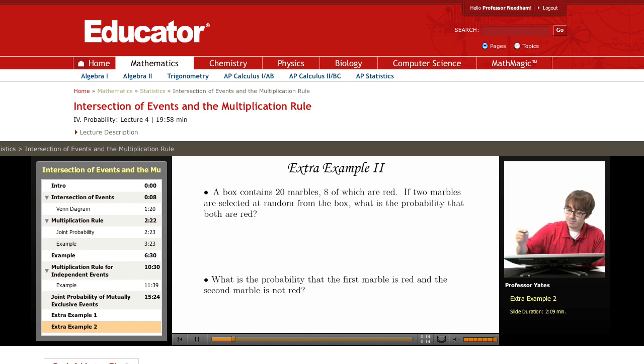I'm interested in the probability that the first marble is red and the second marble is red. These are not independent events because if I take a marble out of the box and I see it's red or not red, it will affect the probability of the next one being red or not red. So this is going to be the probability that the first marble is red times the probability that the second marble is red given that the first one is red.